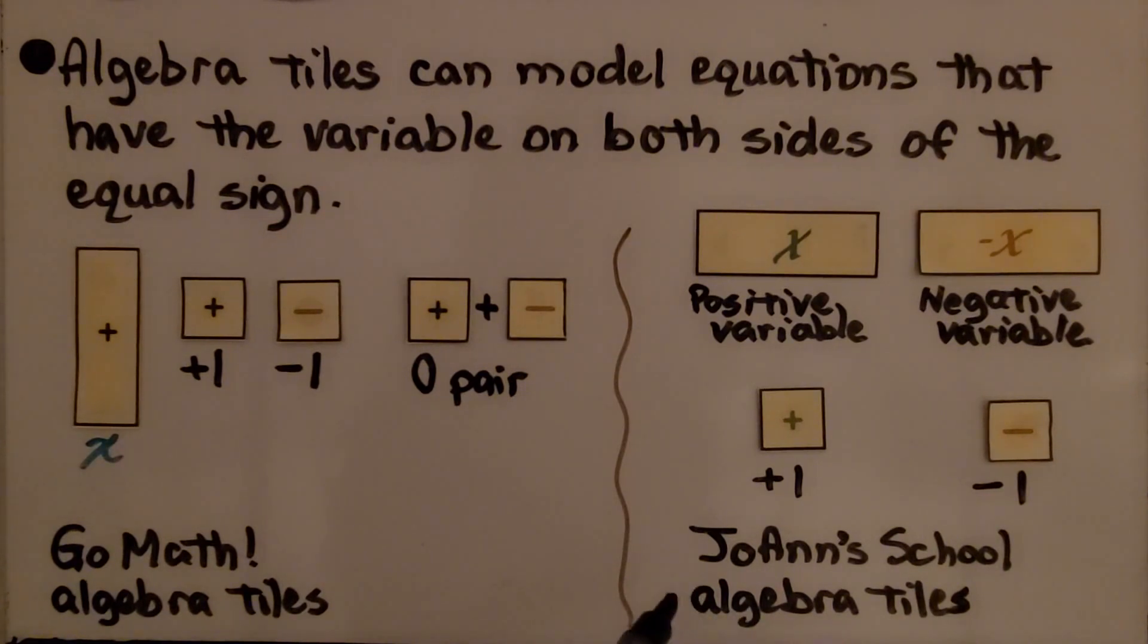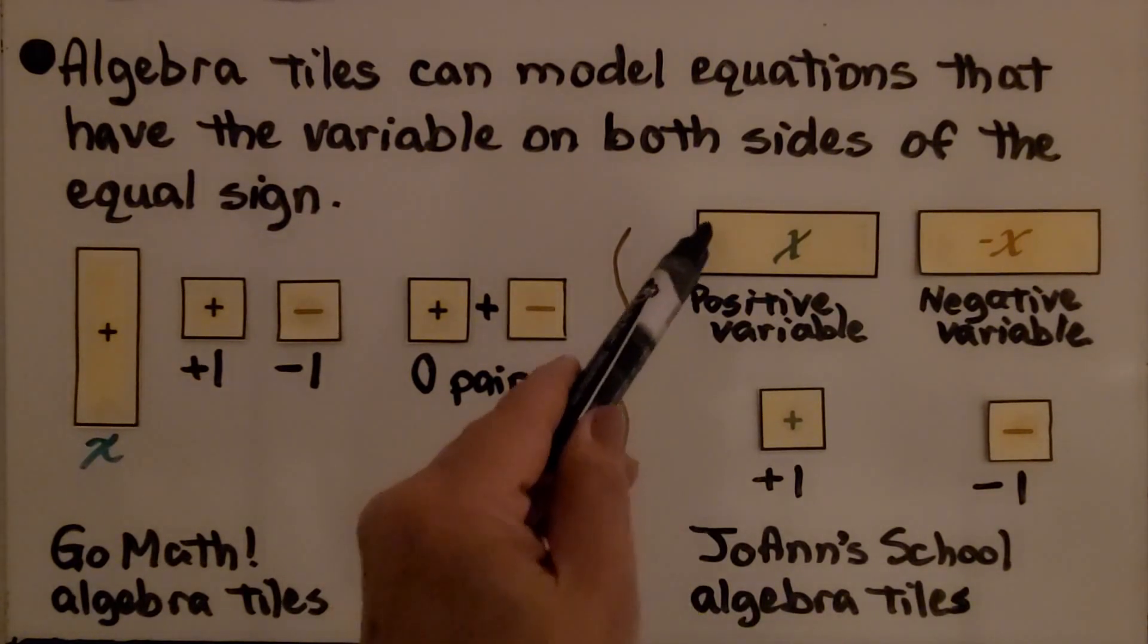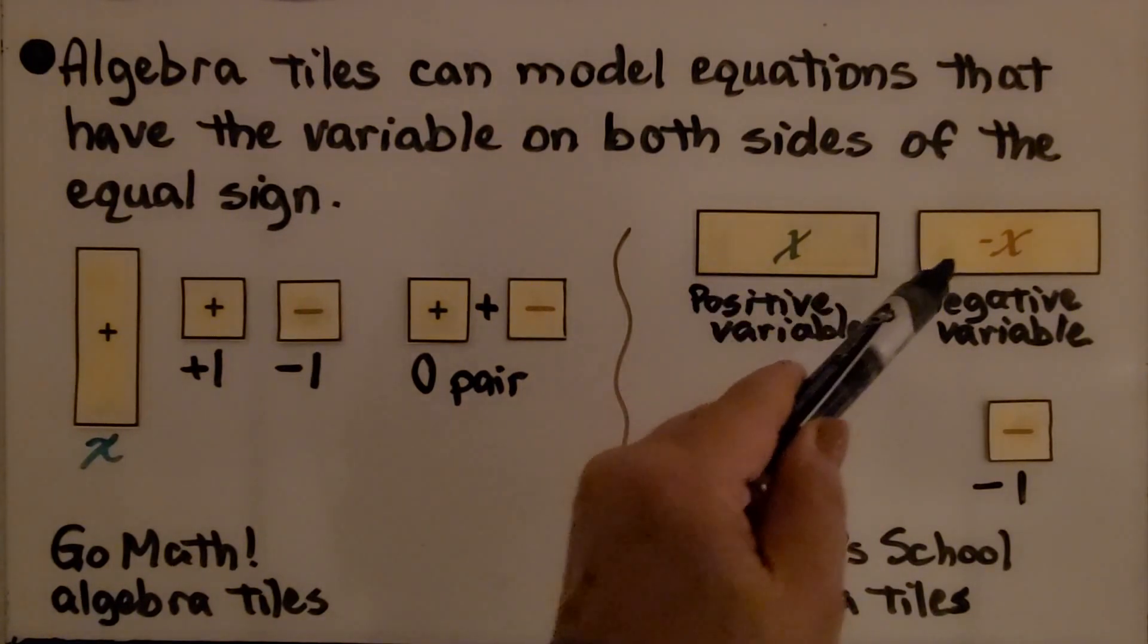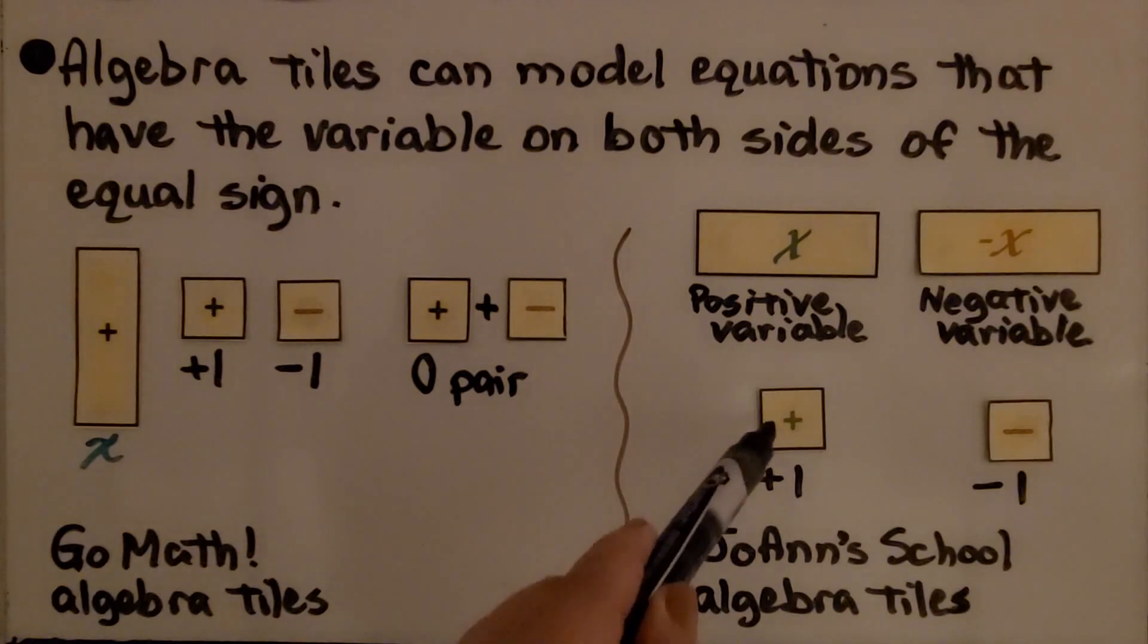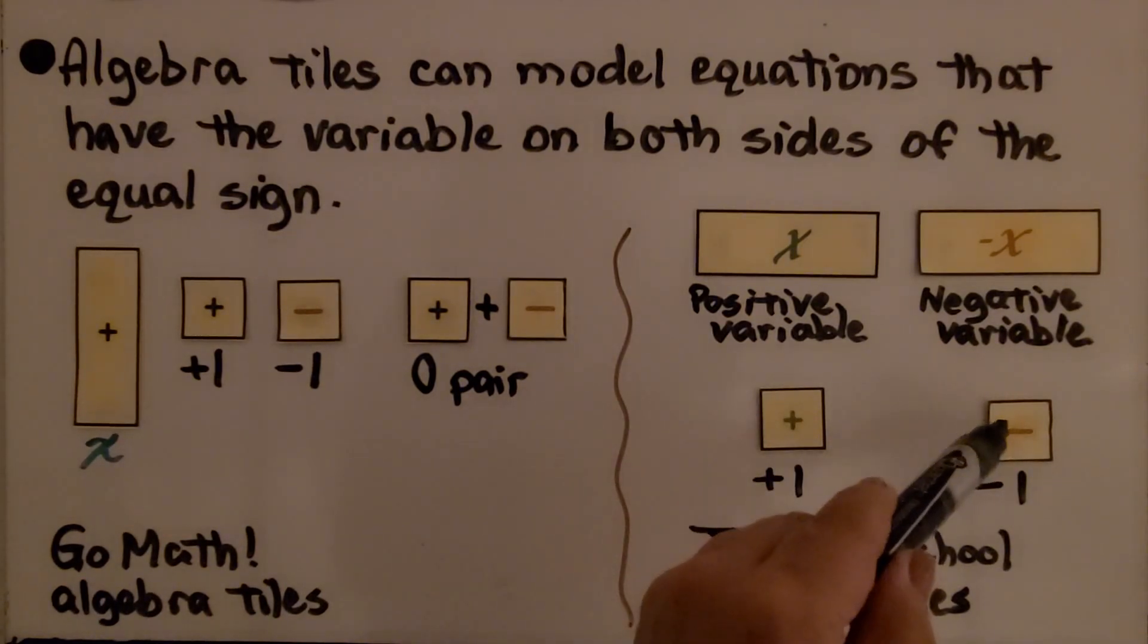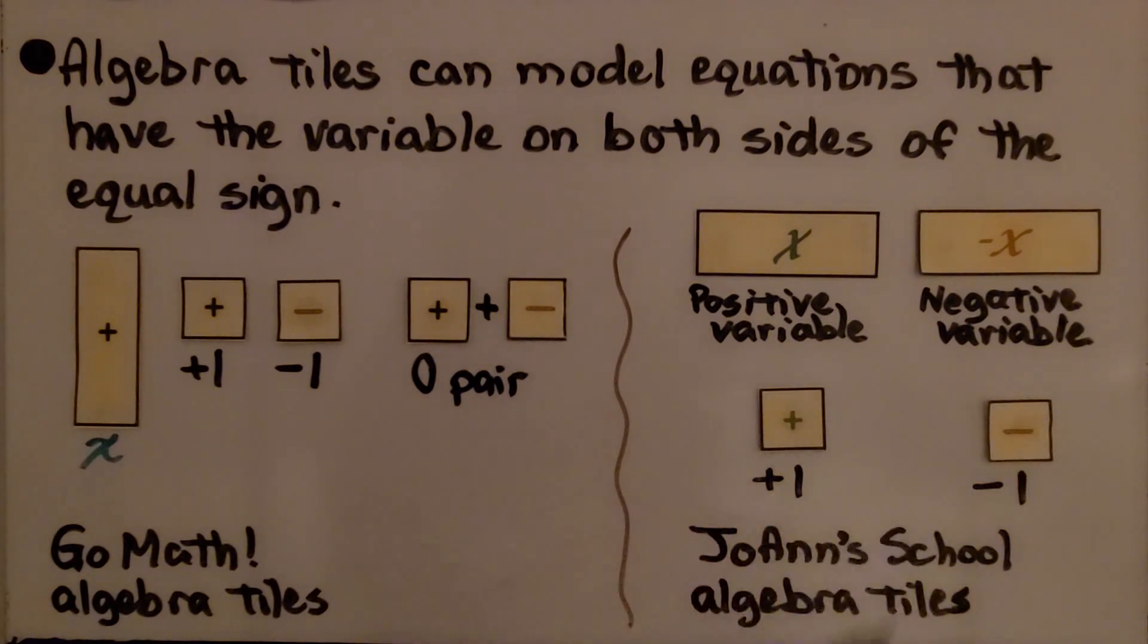I'm using my JoAnn School algebra tiles. I use a rectangular x for a positive variable, a negative x for the negative variable, and I use a plus in green for a plus one and a minus in red for a minus one.